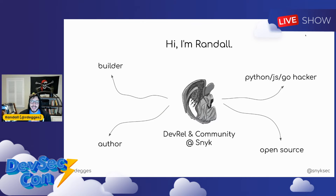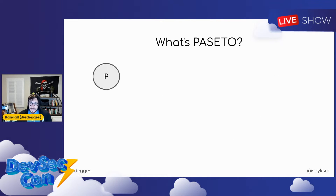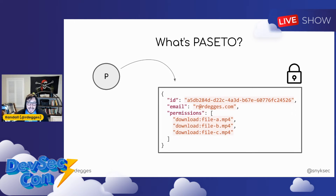So let's get into it. Like the host said, I'm Randall. I work at Snyk. I do DevRel and community, a lot of security and building stuff. You can learn more about me on Twitter or by following the Snyk accounts. So first of all, what's Paseto? You can think of it as really just a blob of JSON data that can be securely transmitted over the internet. That's really all Paseto is — it's a standard that allows you to do this.